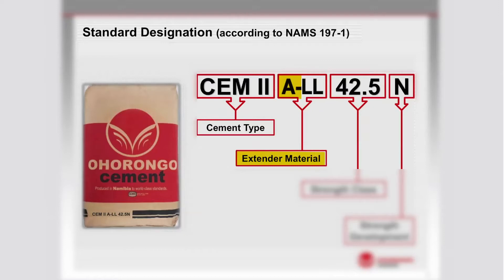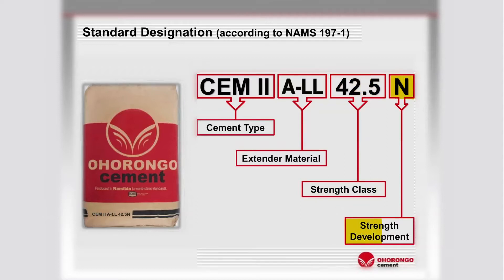The A represents the percentage of additives used in the cement. The LL in this case represents high grade limestone with a low organic content. The 42.5 represents the minimum compressive strength the cement will achieve after 28 days. This strength class is limited to a maximum compressive strength of 62.5 MPa. The N refers to the normal strength of the cement. Please note that the indicators refer to the cement itself only and not to the strength of the concrete mixture.